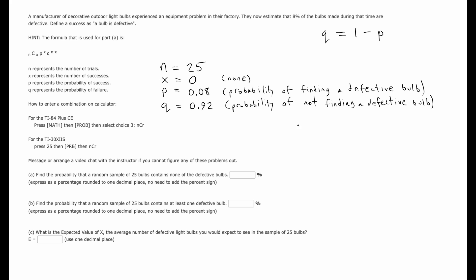Alright, now we just want to plug into the formula. NCX, P to the X, Q to the N minus X. So we want 25C0 times 0.08 raised to the zero times 0.92 raised to the 25 minus zero.